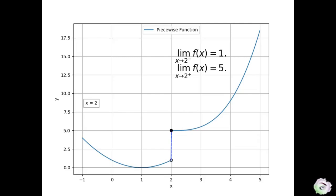Let's now focus on the two-sided limit. We have already found the right limit and the left limit. By examining both limits, we can understand the function's behavior as x approaches 2 from both directions. If both sides are equal to the same value, then the two-sided limit is defined and equal to that value.